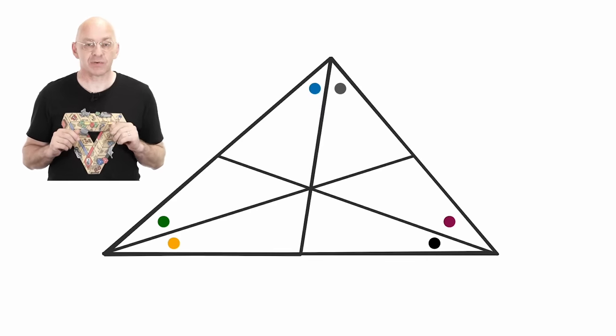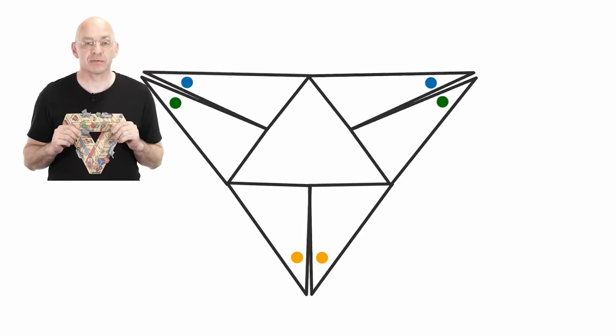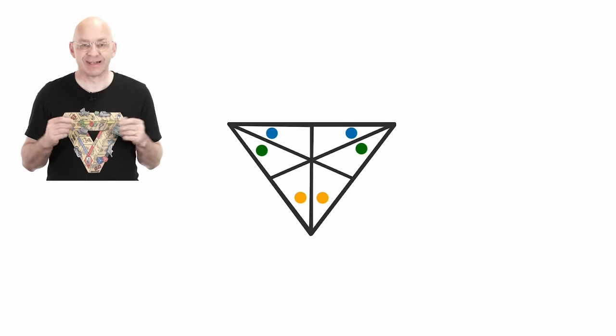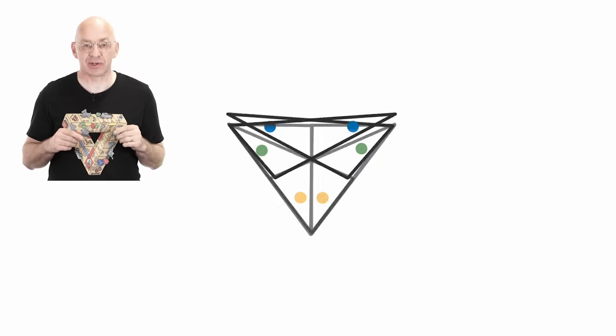isosceles triangles always fold into isosceles triangles. There's an isosceles triangle fold. Another isosceles triangle. And an equilateral triangle folds into another equilateral triangle.